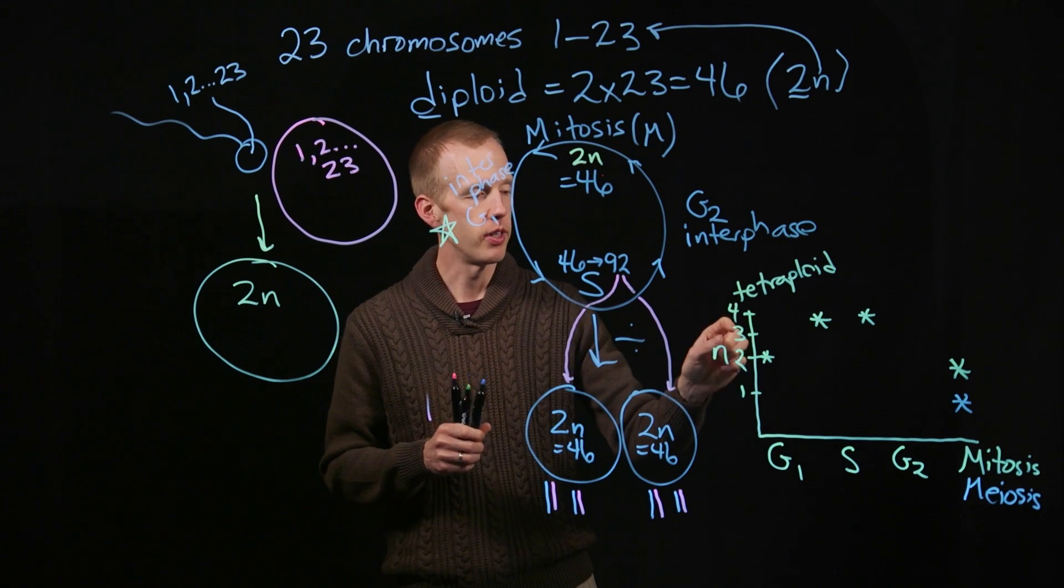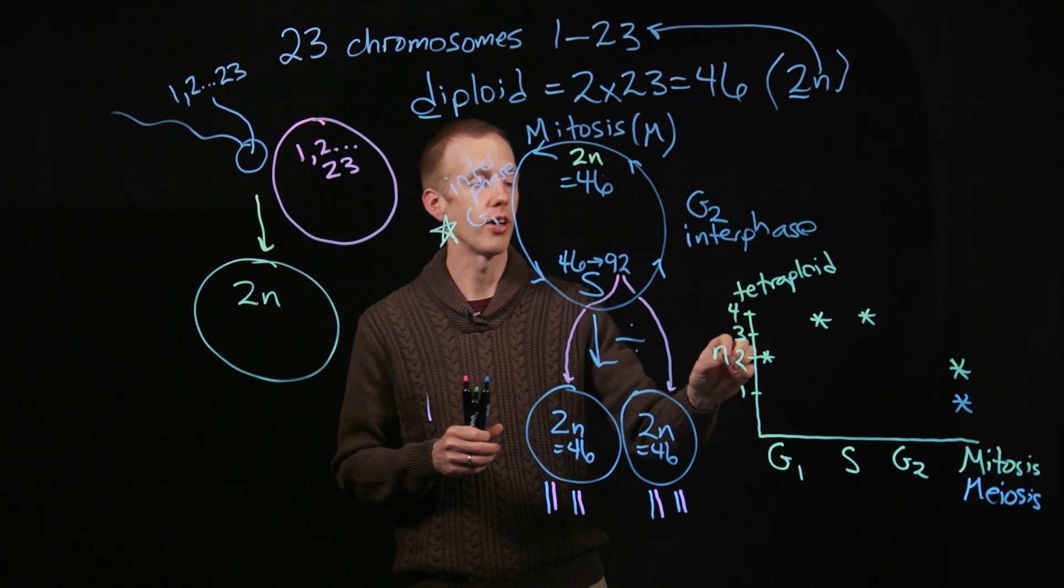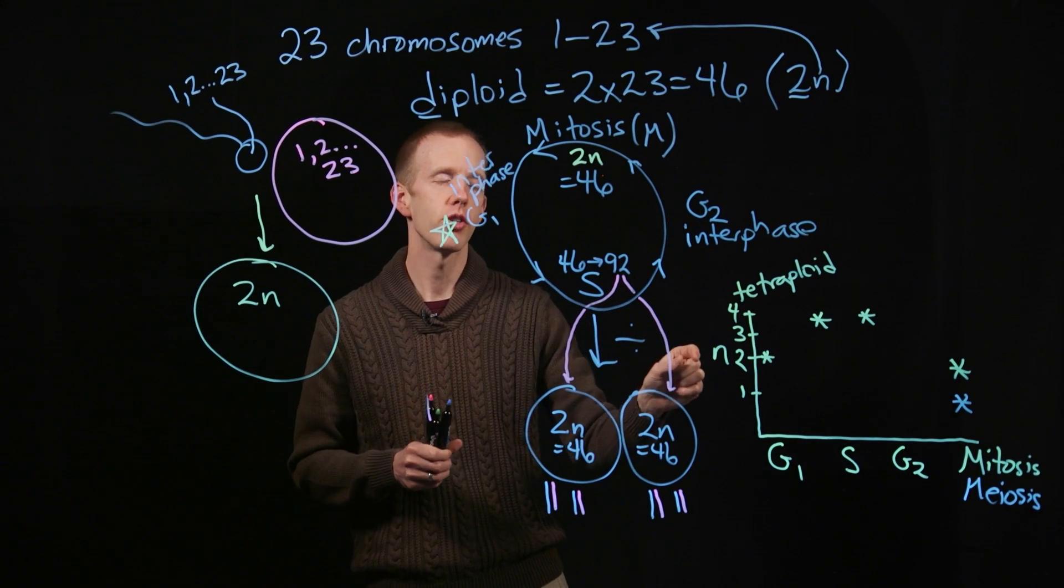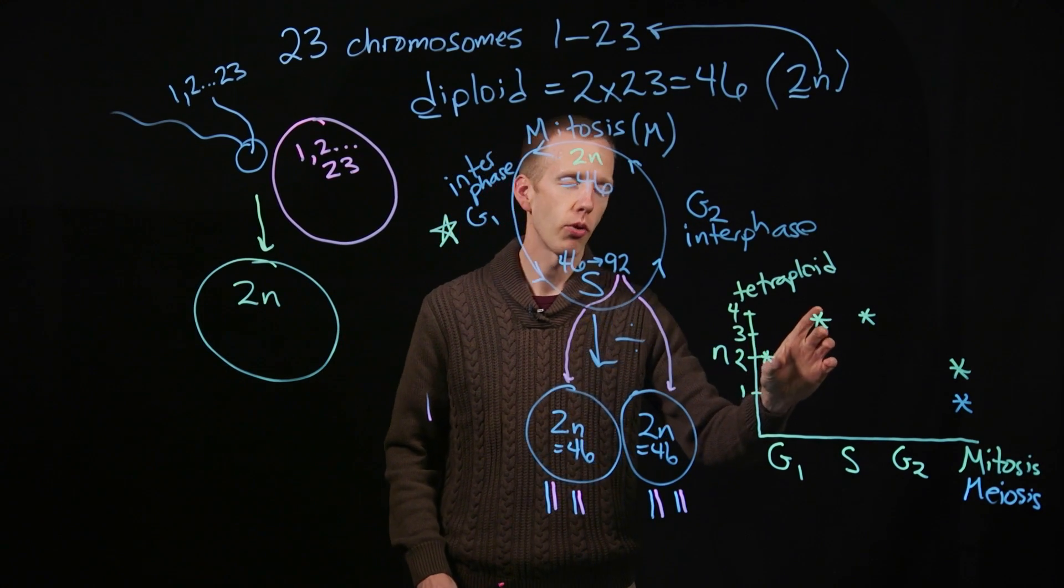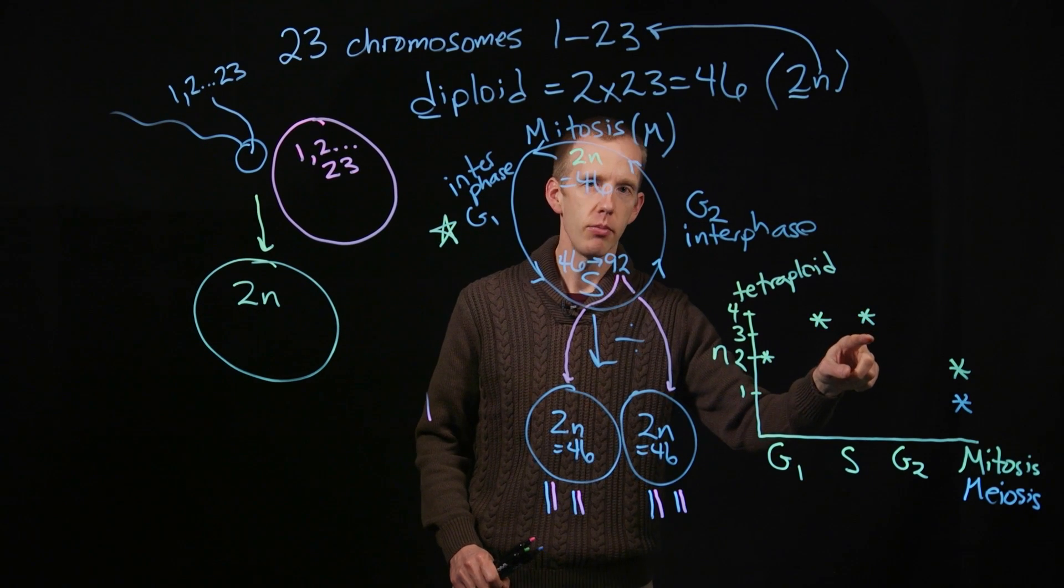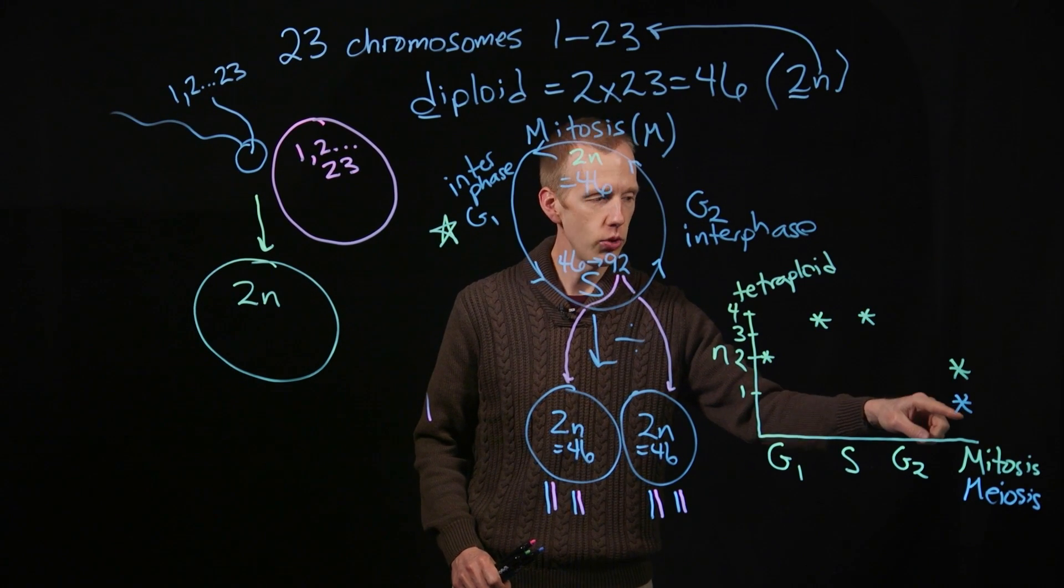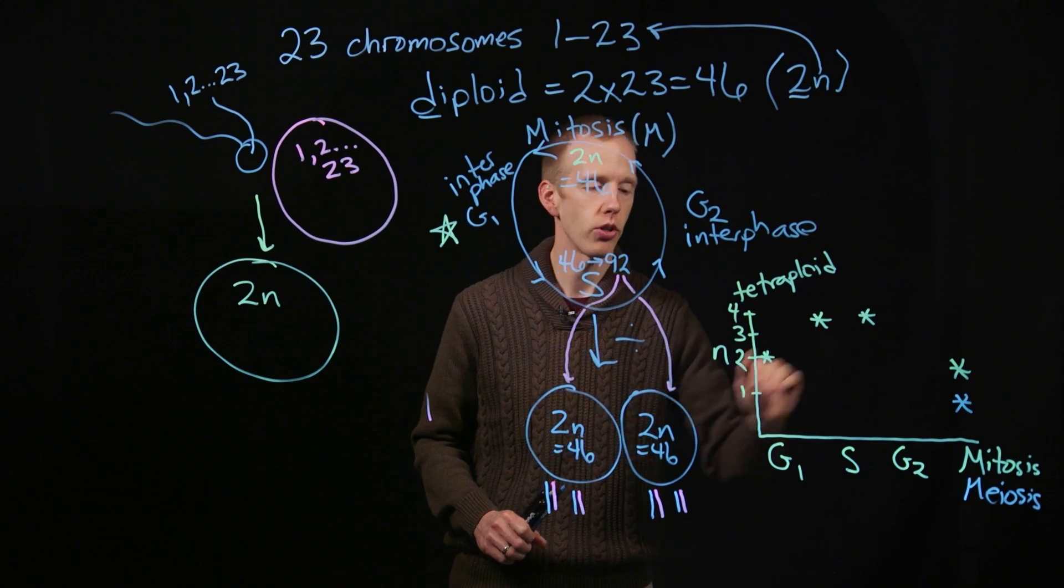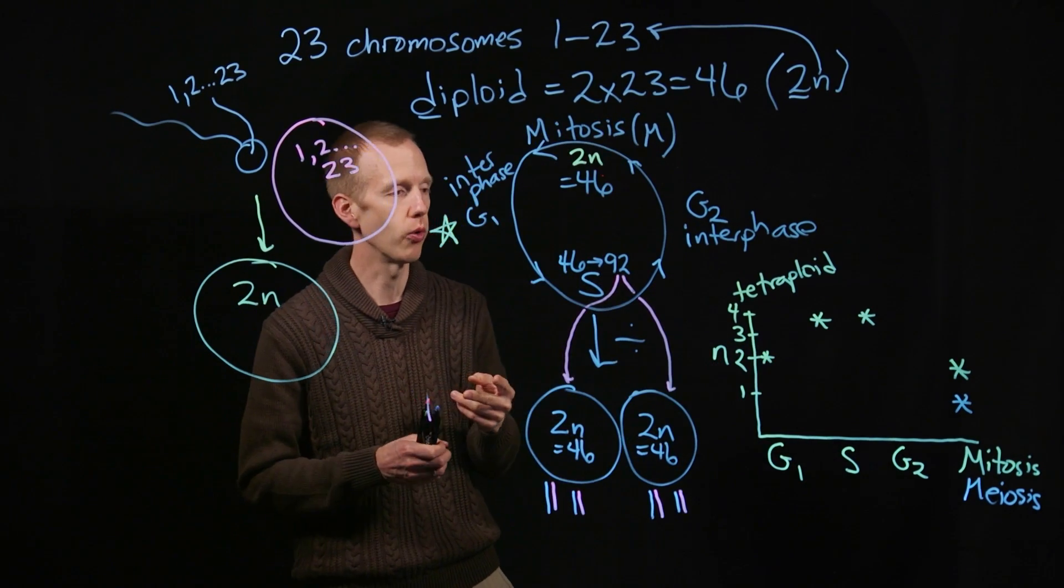this is how the DNA content of a cell changes across the cell cycle. In G1 phase is when ploidy is determined, and then the number of chromosomes doubles during synthesis phase. It stays the same during G2, and then at mitosis, that level of ploidy, the number of copies of DNA, returns to 2 for a diploid organism.